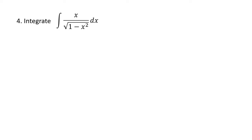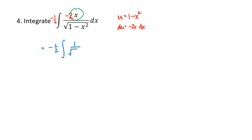This problem looks a lot like the previous one, but there's a slight difference: the top of the fraction is just x instead of x squared. We might jump in and start doing trig substitutions and drawing triangles, but actually this problem is much simpler — it's just a simple substitution problem. If we let u equal 1 minus x squared, then du is negative 2x dx. We can get a negative 2x in the top of the fraction as long as we put a minus one half out front. Not every problem containing a squared minus x squared requires trig substitution; when a simpler method is available, we should use it.